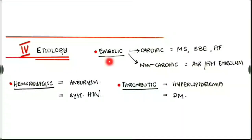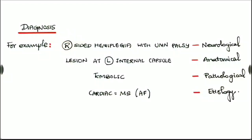Finally, the etiology. If it is an embolic event, it can be a cardiac cause or a non-cardiac cause. Cardiac causes can be mitral stenosis, subacute bacterial endocarditis, or atrial fibrillation. Non-cardiac causes can be air or fat embolisms. A hemorrhagic event can be due to an aneurysm rupture or chronic systemic hypertension. A thrombotic event can be due to hyperlipidemia, diabetes mellitus, etc. Hence we come to the diagnosis — written as: right-sided hemiplegia with UMN palsy (neurological reason), with the lesion at the left internal capsule (anatomical region), embolic event in the region of the middle cerebral artery (pathological event), and etiology as cardiac causes such as mitral stenosis or atrial fibrillation.